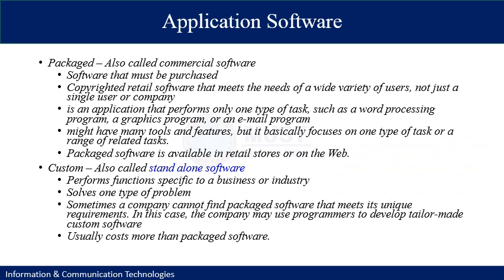The most common type of software is packaged software, also referred to as commercial software — software that must be purchased. When a company develops software for a wide variety of users, it is called packaged software. It meets the needs of a wide variety of users and performs one type of task or related tasks within a single task domain. Examples include word processing programs, graphical programs, or email. Packaged software is available in retail stores or on the web.